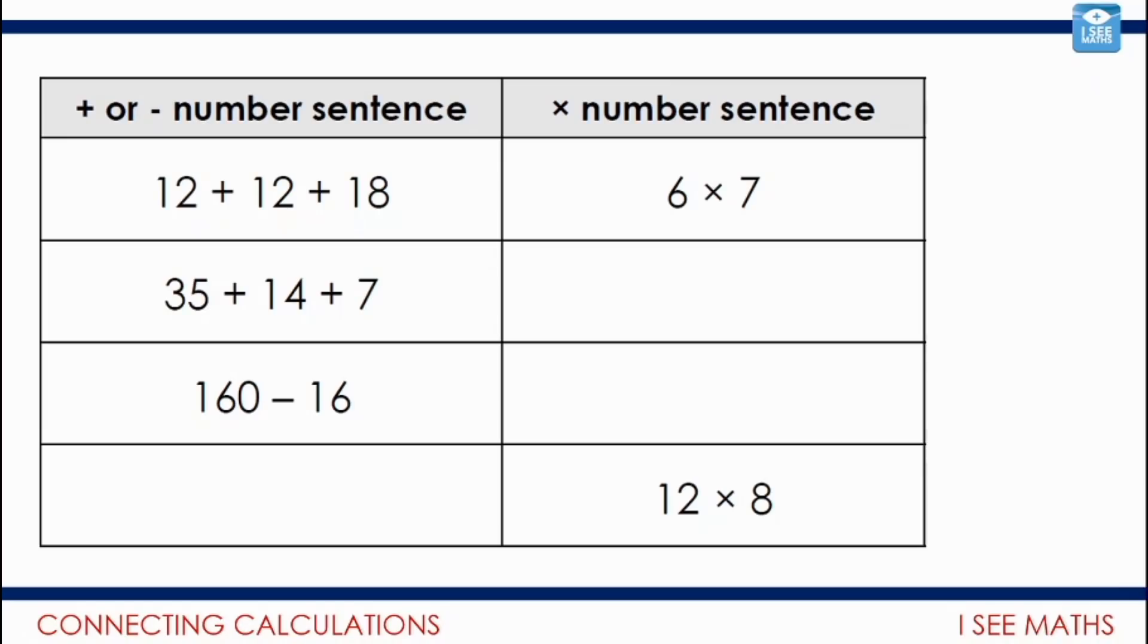Have a look at this grid, and I wonder if you can work out the missing multiplication number sentence for these examples. There's an example that's been done for you at the top: 12 plus 12 plus 18. 6 is a factor of 12 and 18, so 2 sixes there, 2 sixes there, 3 sixes there. So how many 6s in total? 7 sixes. Pause the video and see if you can complete the other 3 examples.